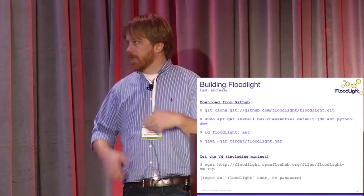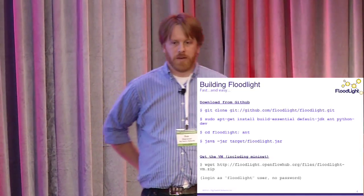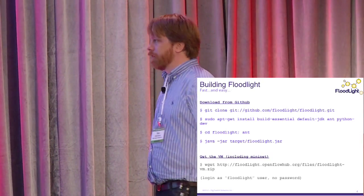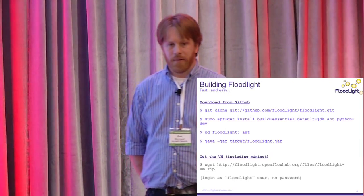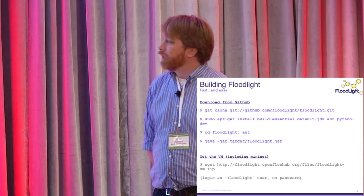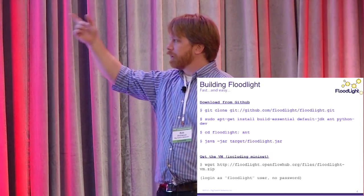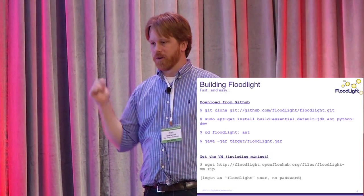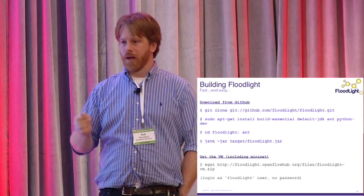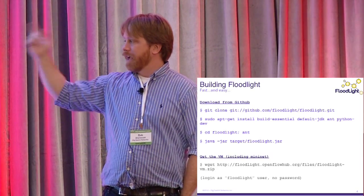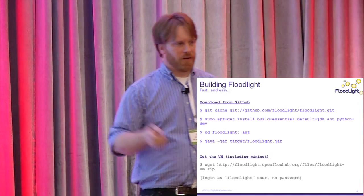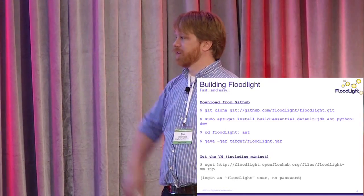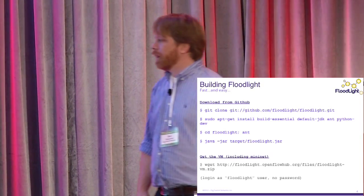Usability is a chief concern. Grabbing and running Floodlight, you could have it up and running in the time it takes to download plus five or six seconds. You can grab the code directly from our website using Git, or download the VM, which includes a pre-built version of Mininet, the Wireshark Dissector, and Floodlight. You run Ant, which is Java's version of Make — there's even a Makefile for people who can't remember to type Ant. And then to execute it, you run it like any other Java program.